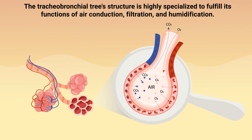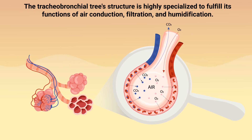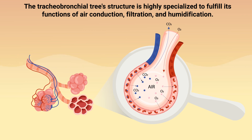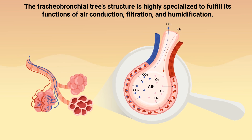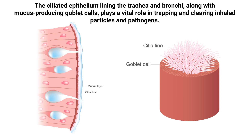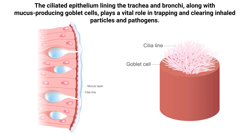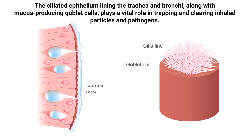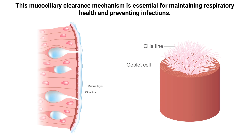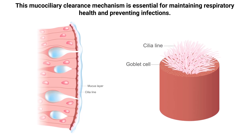The tracheobronchial tree structure is highly specialized to fulfill its functions of air conduction, filtration, and humidification. The ciliated epithelium lining the trachea and bronchi, along with mucus-producing goblet cells, plays a vital role in trapping and clearing inhaled particles and pathogens. This mucociliary clearance mechanism is essential for maintaining respiratory health and preventing infections.